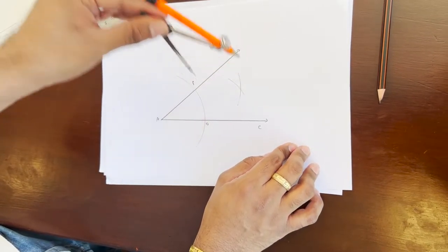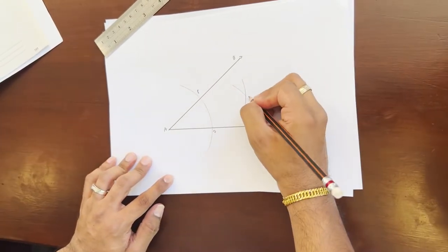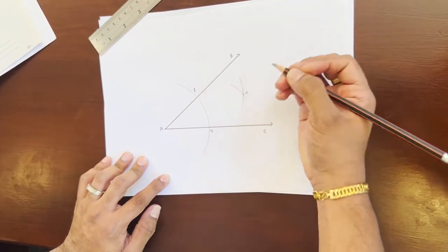You see here it's intersecting. These two arcs are intersecting. Let me call it point Q. So this is the intersecting point.